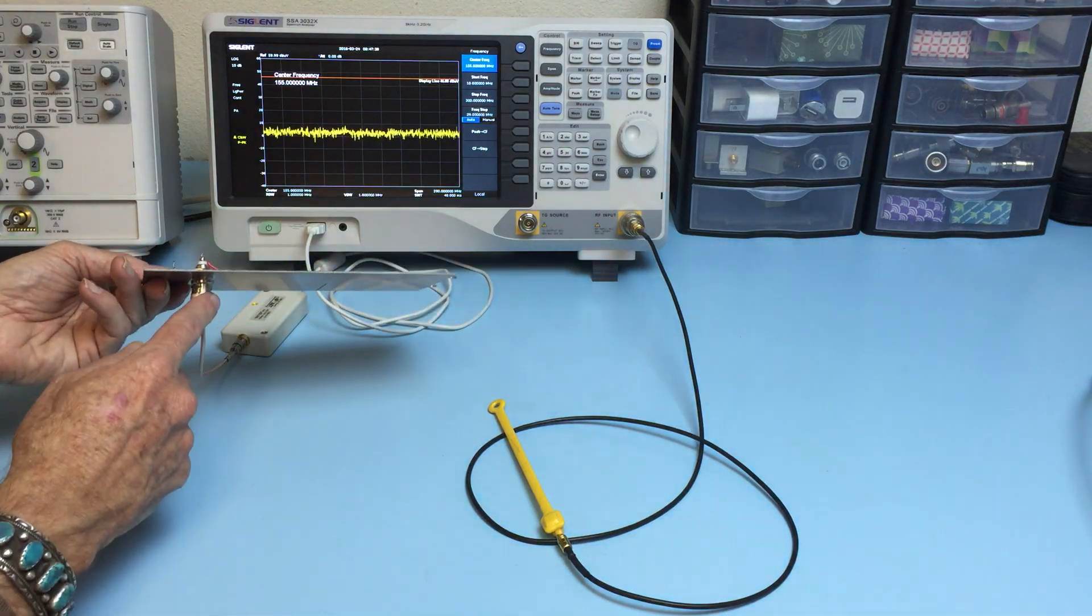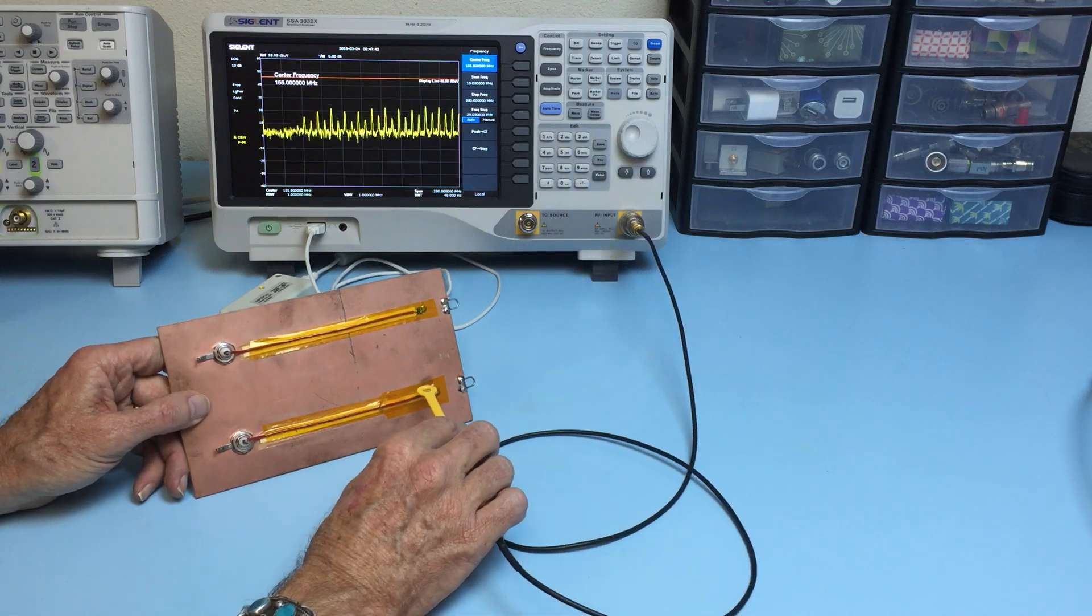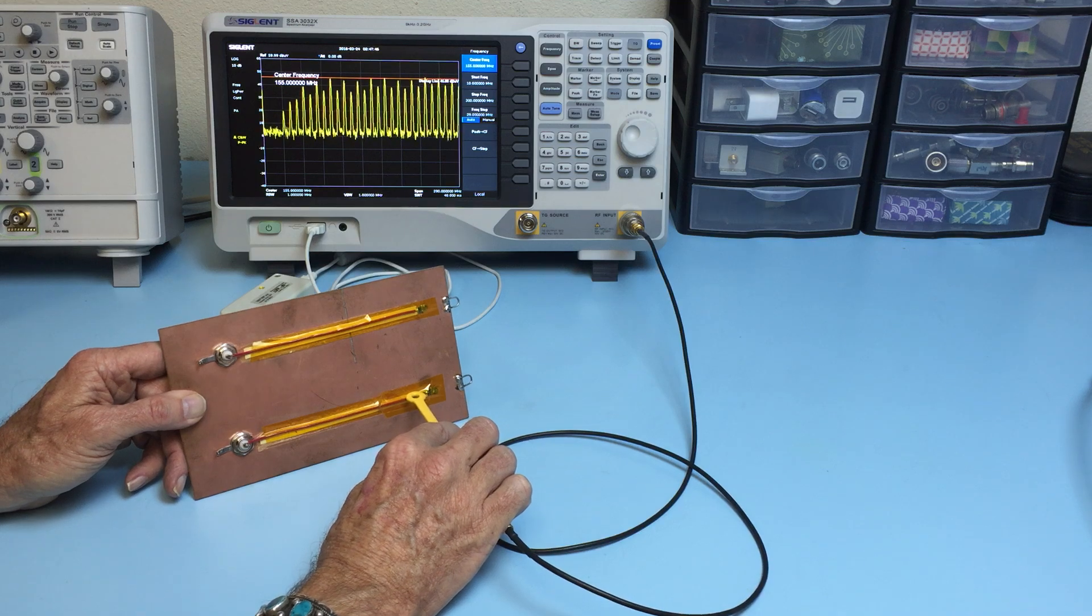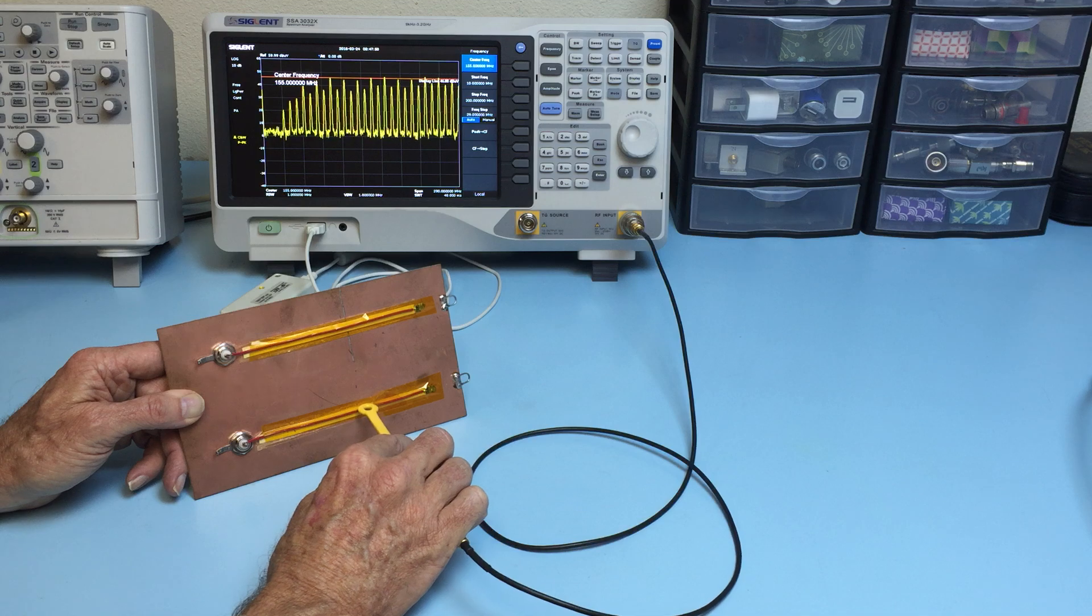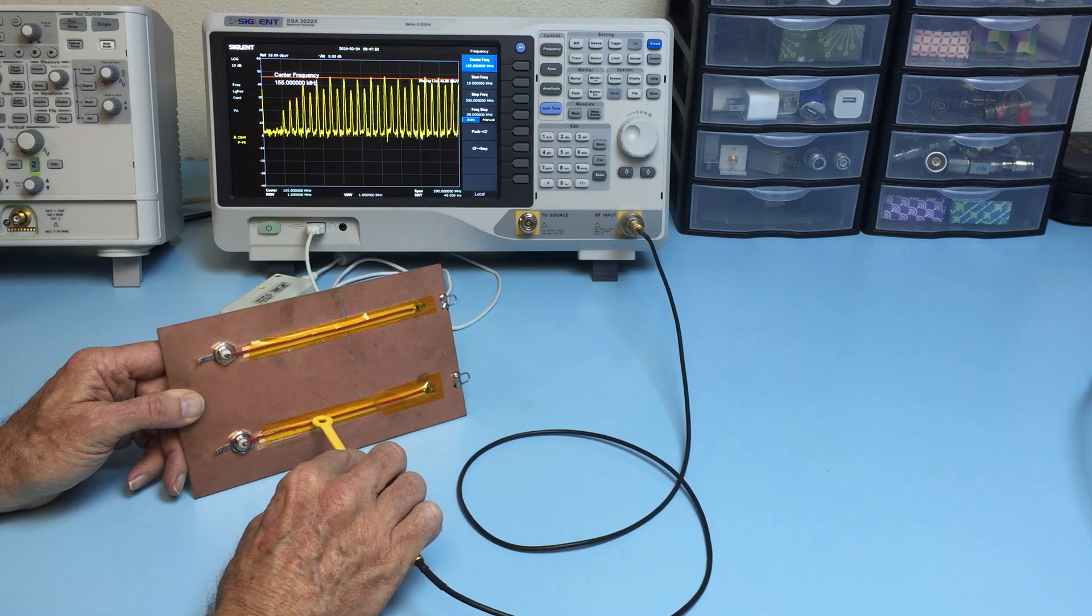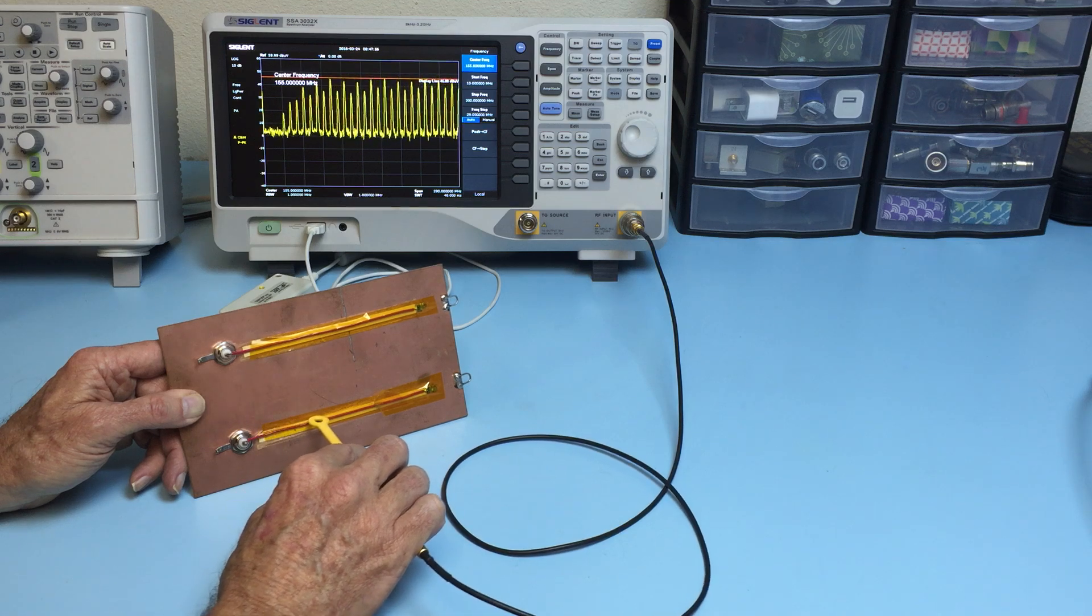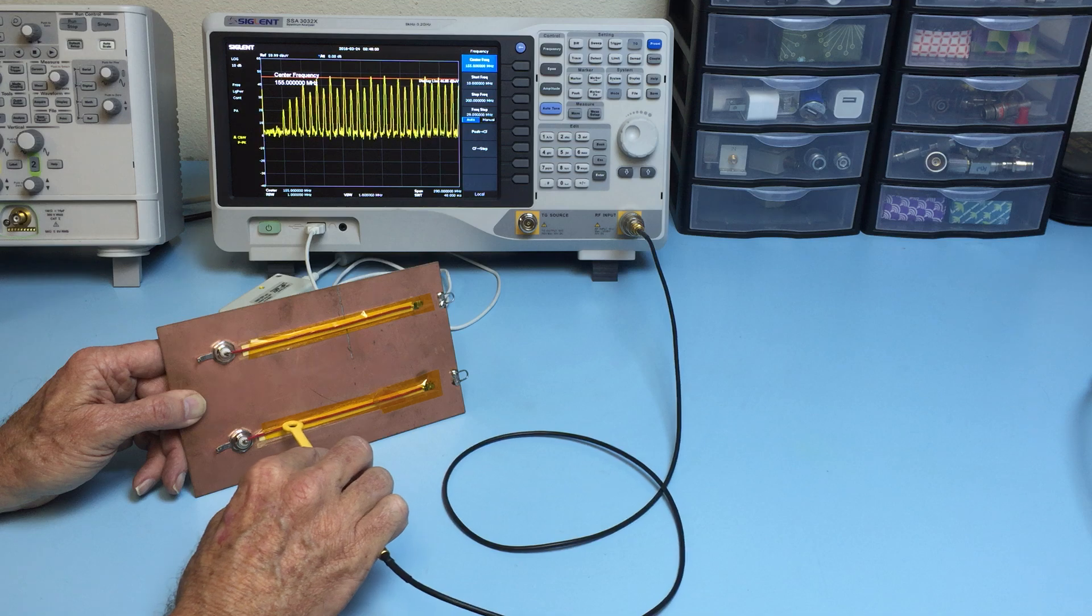I've connected the pulse generator to this trace and we'll be receiving with the near field probe. And you can see that the average amplitudes are about the 46 dB microvolt level where I've set the display line. And it's about the same no matter where I probe.